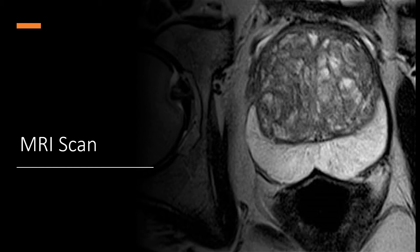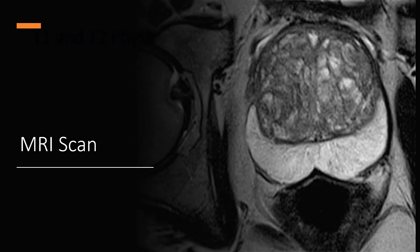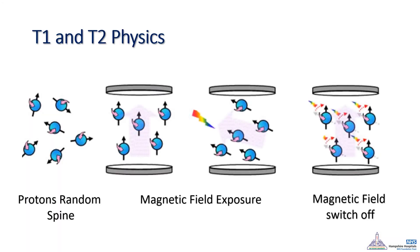In the last decade, MRI has been very popular in the urology field, especially for the prostate. To simplify its physics: our body is formed of atoms with electrons moving around them. In the resting state, protons move and spin randomly. When exposed to a magnetic field, they take a special alignment. When the magnetic field switches off, the protons return to their original state and release some energy, which is captured and converted into an image.